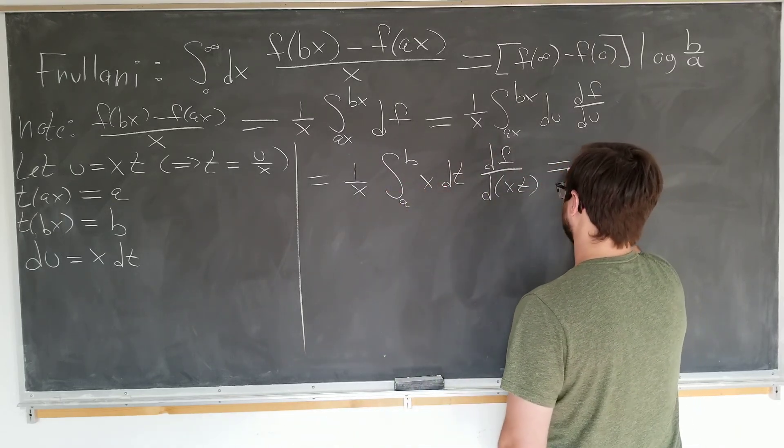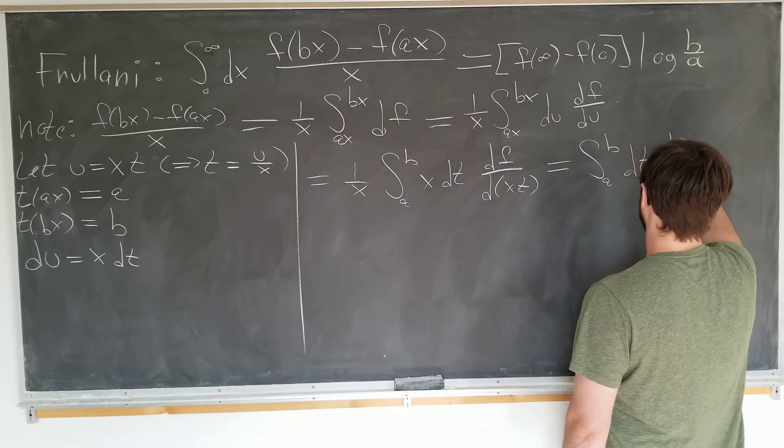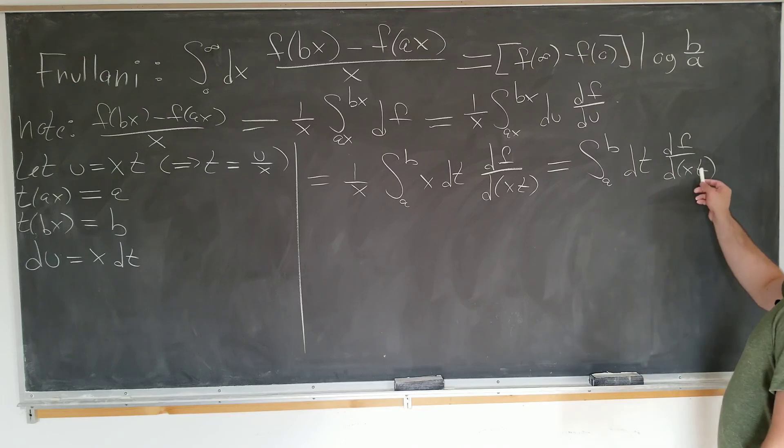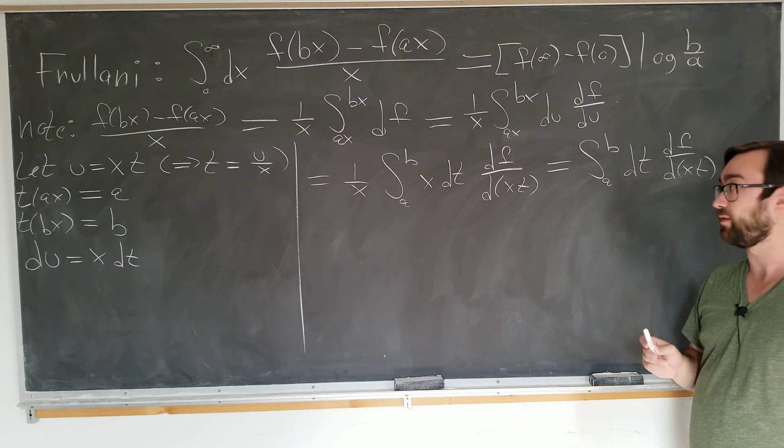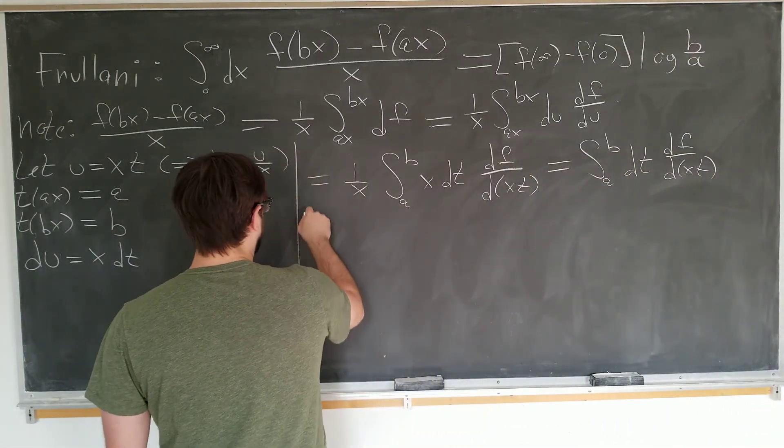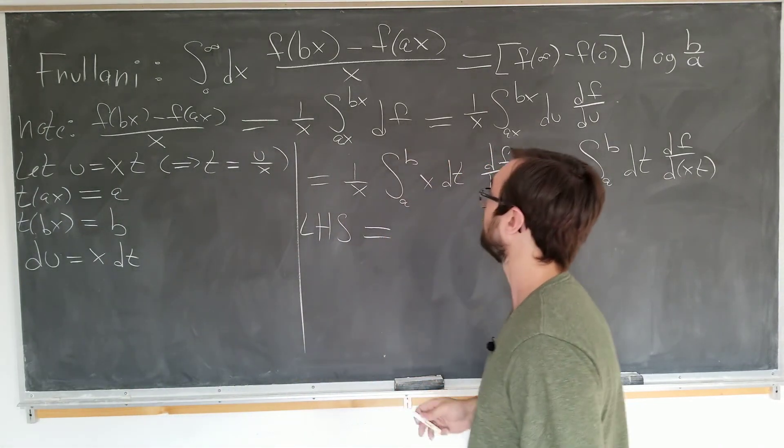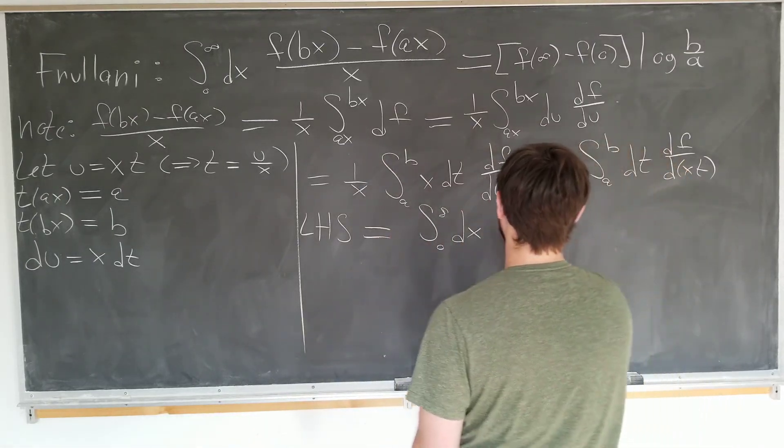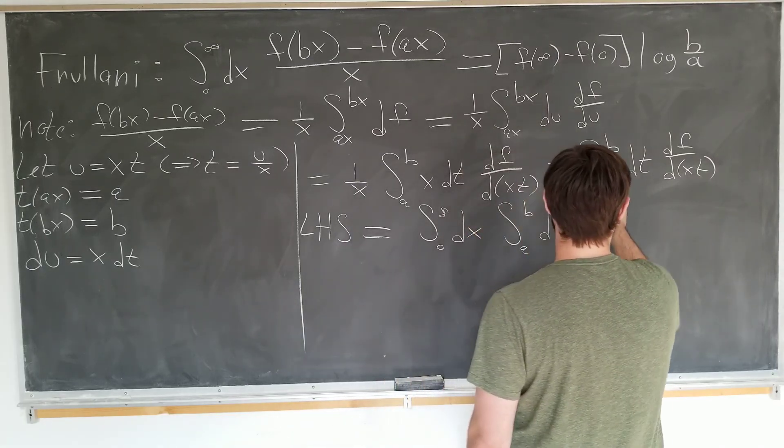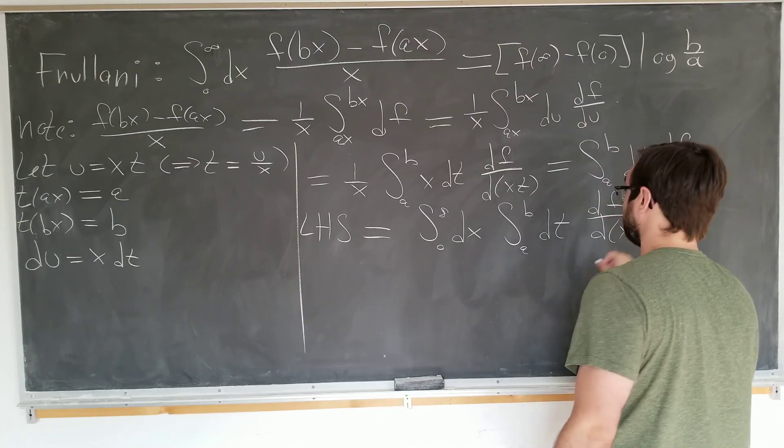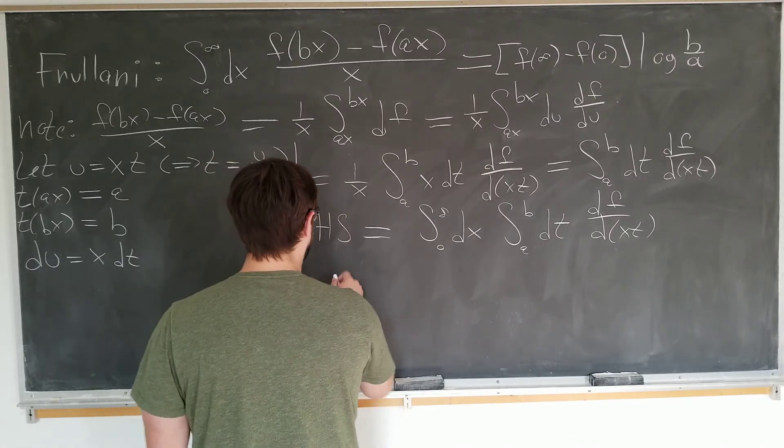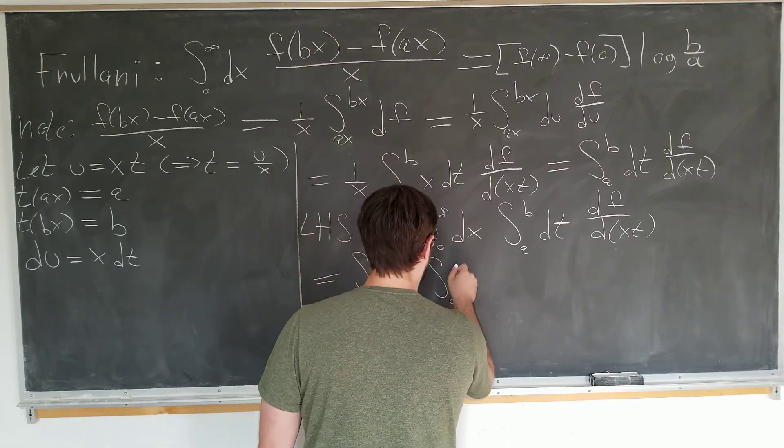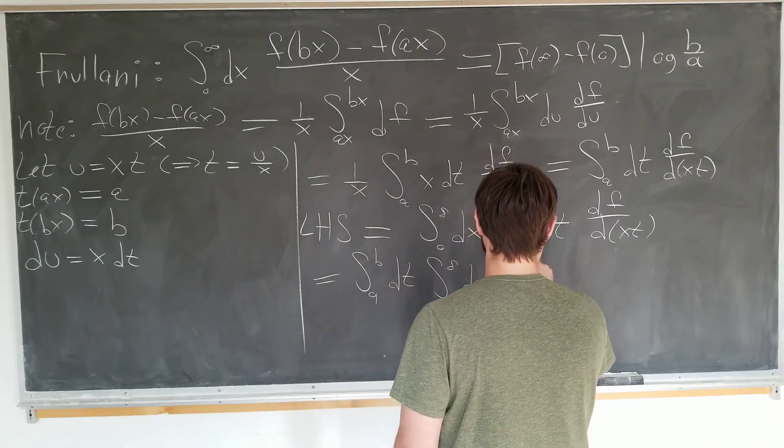We're going to have 1 over x integral from a to b. And we have x dt now. And we have df with respect to our new variable xt. We're going to cancel these x's. Great. That is pretty much as far as we can go in this form. If we want to bring one of these variables outside, we would have to integrate over x to make it a valid expression. So why don't we do that now? So now we have the left-hand side of the expression that we want to evaluate. It's simply integral from 0 to infinity of dx of what we just did here. Which is a to b dt, df by dxt. And we can go ahead and interchange the limits of integration.